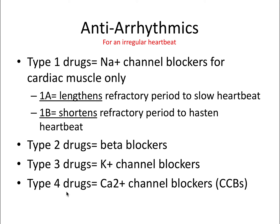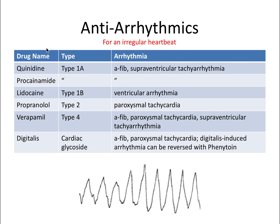Here are the specific antiarrhythmics. It's helpful to know which ones treat atrial fibrillation, or AFib. Quinidine can be used for AFib. Verapamil and digitalis can also be used for AFib. There are also drugs for supraventricular tachyarrhythmia and other specific arrhythmia types. You can measure a patient's heartbeat to determine the arrhythmia type and then prescribe the proper antiarrhythmic.